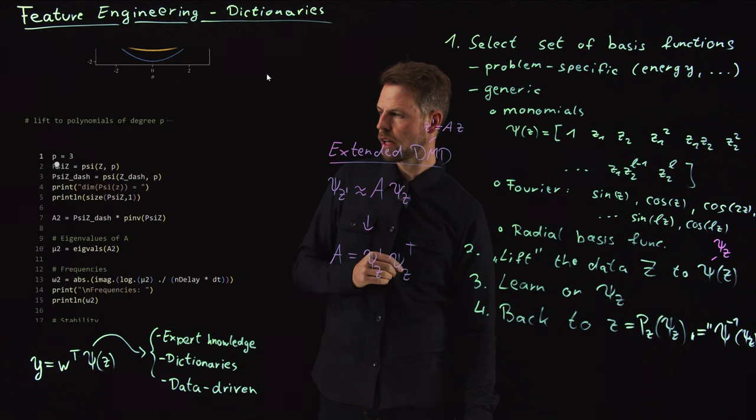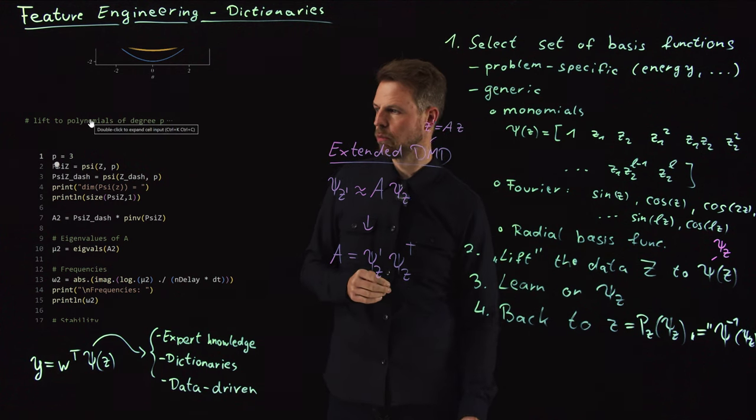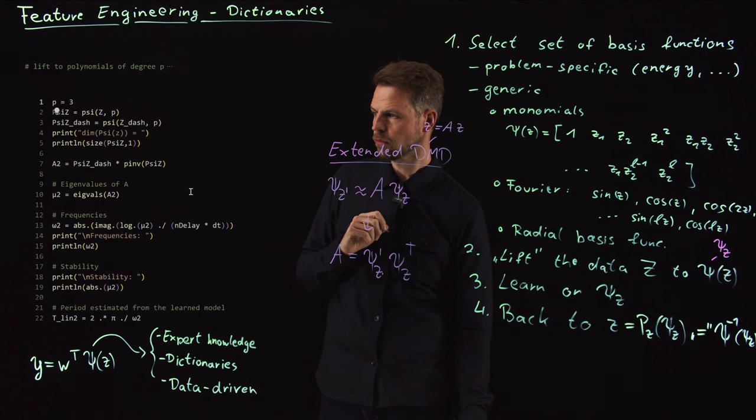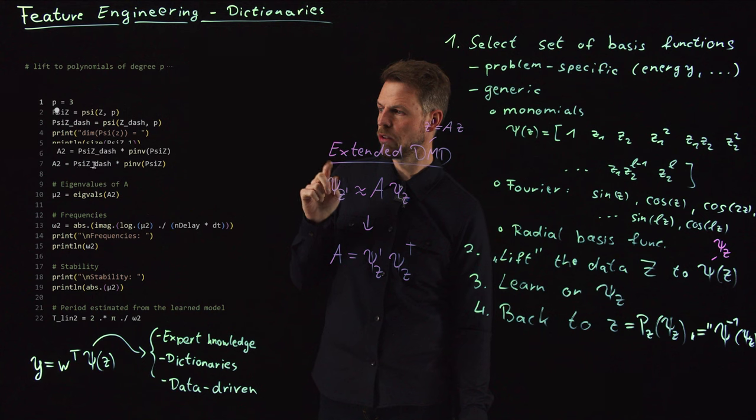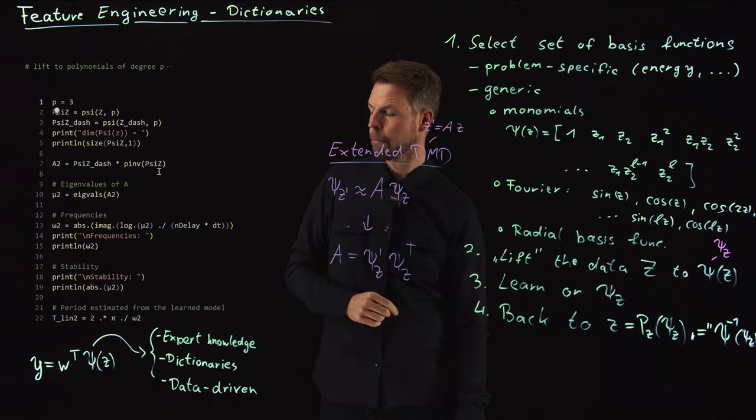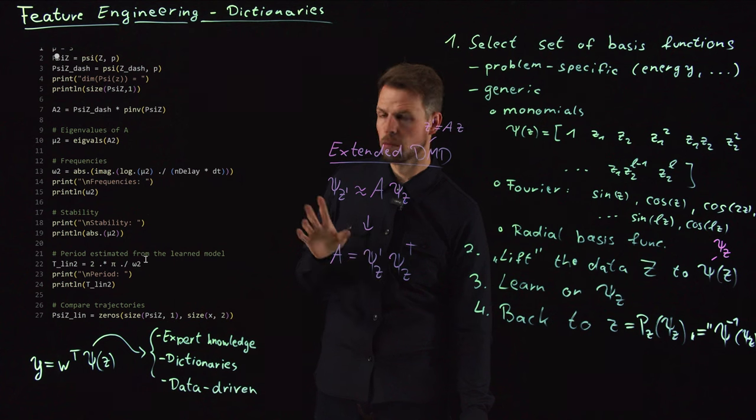And so what we can do now is we can lift this to polynomials. I've hidden the code here. You can look it up in the GitHub repo, but basically what the PSI-Z does, it takes all combinations of monomial terms up to degree 3 that I've defined by my p term here. And then I'm doing exactly the same thing as before. So the A2 matrix is now PSY-Z dash times the inverse of PSY-Z, so exactly the formula that I've derived here. And then I can again look at frequencies and stability and so on. Maybe this is not so important here.